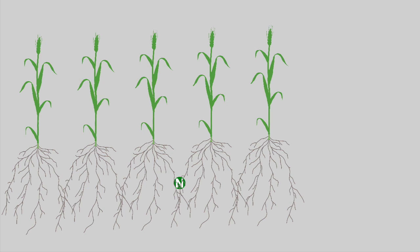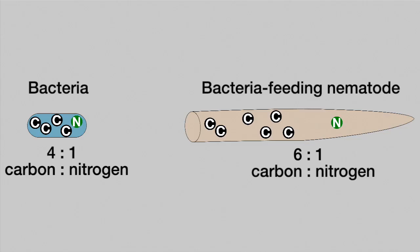Of course, there are more than 12 carbon atoms and 3 nitrogen atoms in 3 bacteria, but it's the ratio that's important in this instance. This difference in the carbon to nitrogen ratios allows for nutrient release into the soil environment.